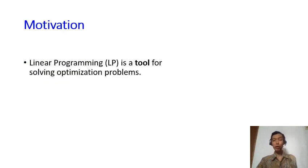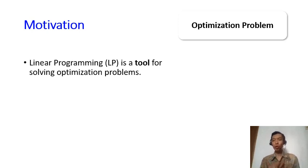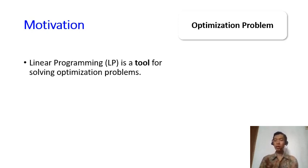Linear programming is simply a tool for solving optimization problems. In the real world, you have a problem that you would like to optimize — meaning you want to maximize or minimize something. For example, you want to maximize the profit that you gain, or you want to minimize the cost of your production system. Those are problems that can be called optimization problems.